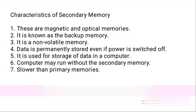Characteristics of secondary memory: these are magnetic and optical memories. It is known as the backup memory. It is a non-volatile memory — data is permanently stored even if power is switched off. It is used for storage of data in a computer. The computer may run without the secondary memory. It is slower than primary memory.